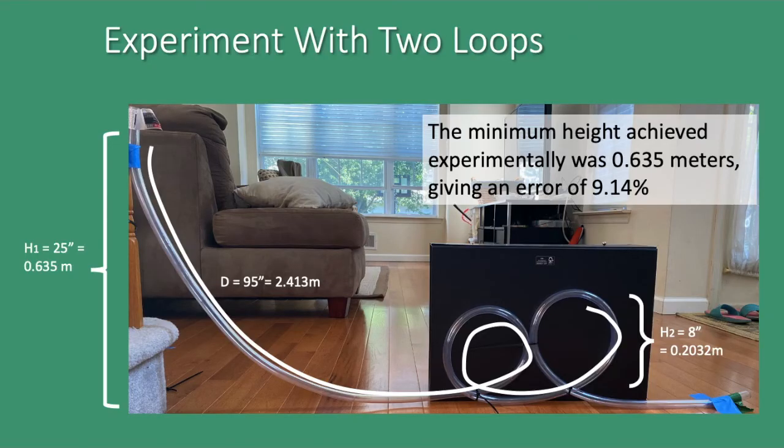Experimentally, the lowest height at which the ball could travel around both loops was 0.635 meters, giving me an error of 9.14%.